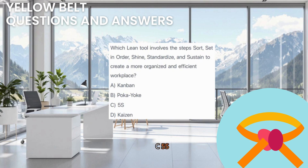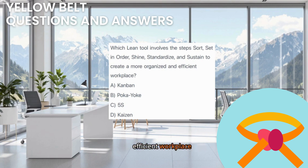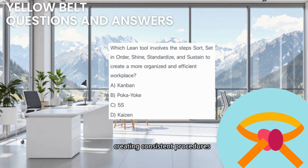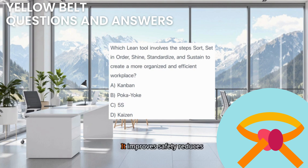The correct answer is C. 5S. 5S is a foundational lean tool focused on creating and maintaining an organized, clean, safe and efficient workplace. The five steps — originally from Japanese terms — are: Sort (removing unnecessary items), Set in Order (arranging necessary items logically so they are easy to find and use), Shine (cleaning the work area), Standardize (creating consistent procedures to maintain the improved state), and Sustain (developing the discipline to keep adhering to the standards). It improves safety, reduces waste like motion and waiting, and makes abnormalities more visible.